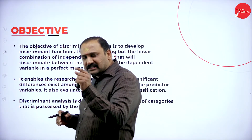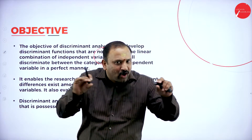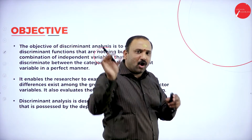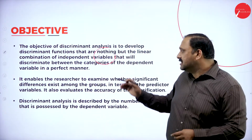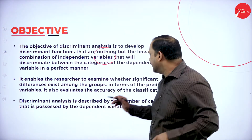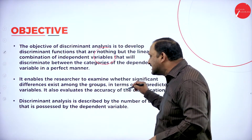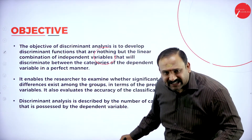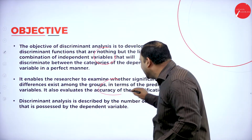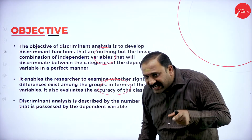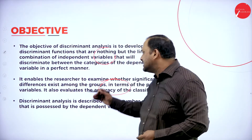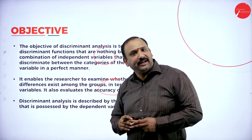When we talk about this linear combination, are they all fitting on a straight line, or is the movement of the variable projected towards some other corner? Similarly, it enables the researcher to examine whether significant differences exist among the groups in terms of predictor variables, or it also evaluates the accuracy of the classification — whether there is any kind of variation existing among the groups of the predictor variable.